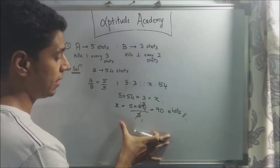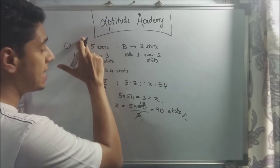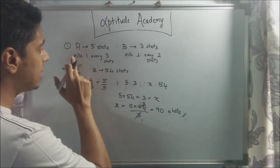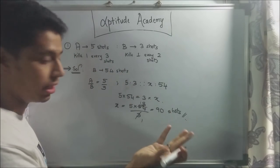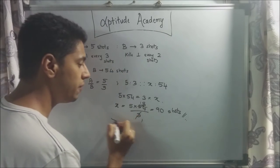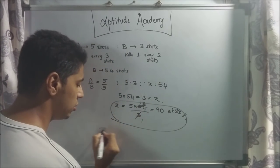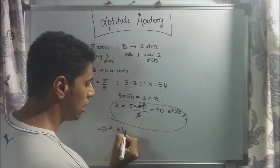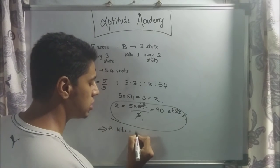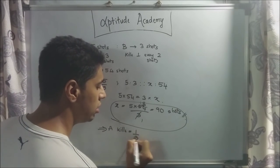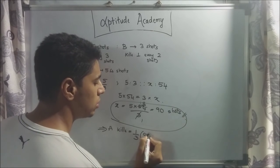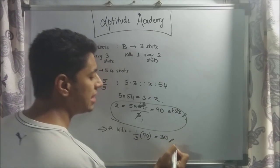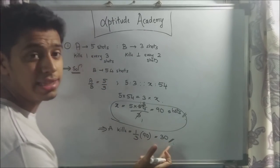But the problem is not over — they've asked how many has A killed. We know that A kills 1 every 3 shots, so 1/3 of his shots result in kills. 1/3 of 90 is 30. So the number of kills that A has got is 30.